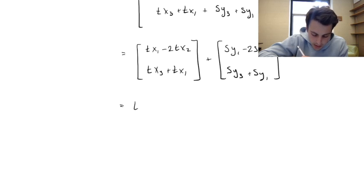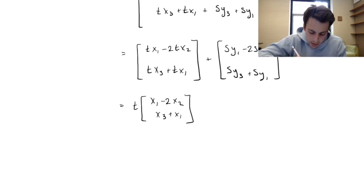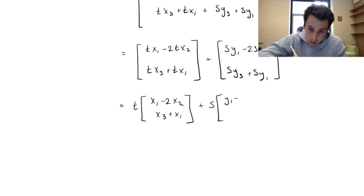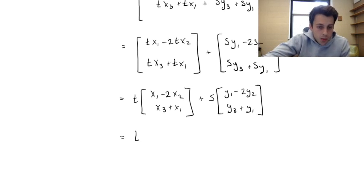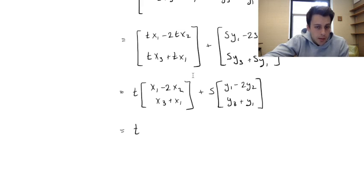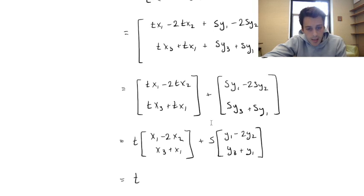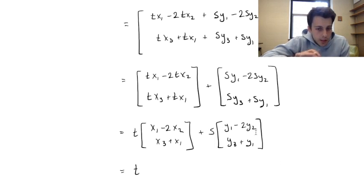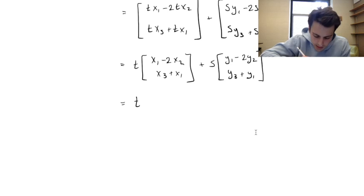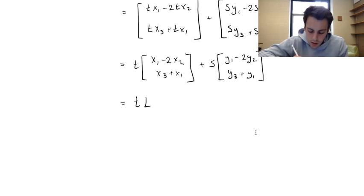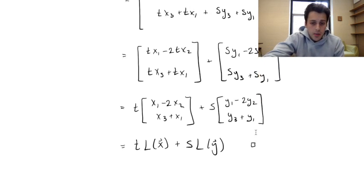After factoring, we get t times the vector (x1 minus 2x2, x3 plus x1), and similarly for the second vector, we get s times (y1 minus 2y2, y3 plus y1). That first vector is, by definition, exactly what happens when we take the linear transformation of x. And that second vector is just the linear transformation of y. So it's really t times L(x) plus s times L(y).